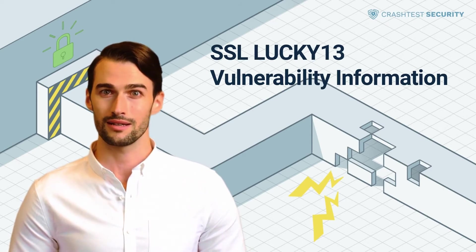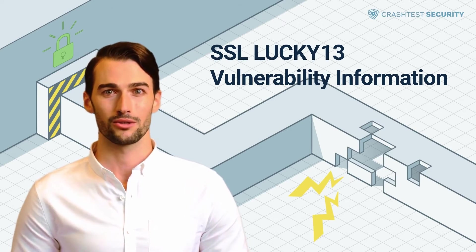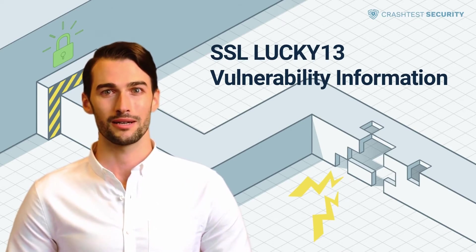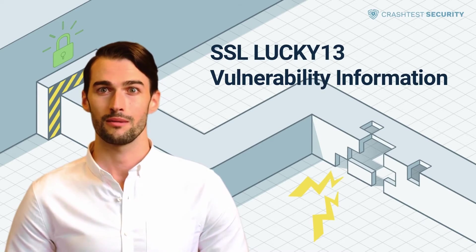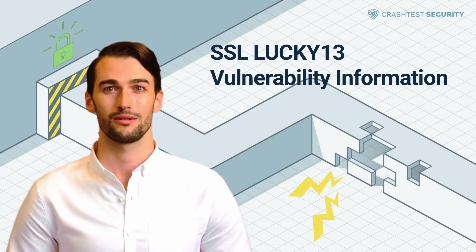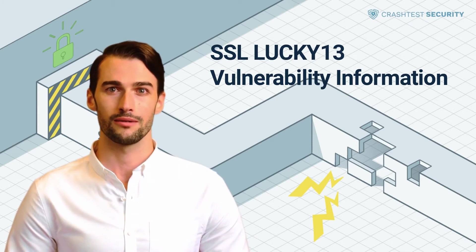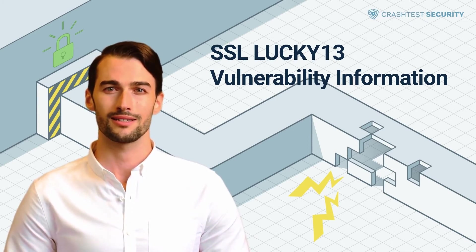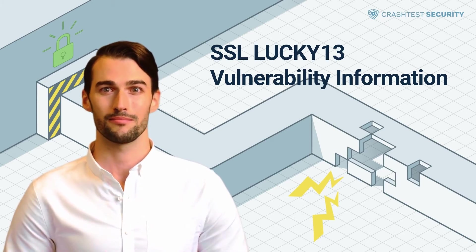Under OpenSSL, the attack allows a full plaintext recovery, whereas for NewTLS, a partial plaintext recovery attack can be conducted. In the latter case, an attack can recover up to four bits of the last byte of blocks of plaintext. As a result of a successful attack, an attacker exploiting this vulnerability is able to read the plaintext of a TLS encrypted session, which can result in the loss of sensitive information.